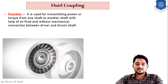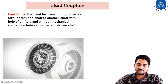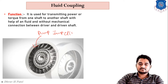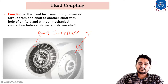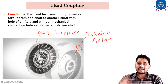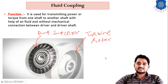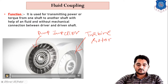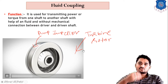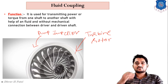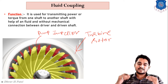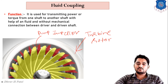Let's look at the basic construction of fluid coupling using a 3D animation. On the driver shaft, one pump impeller is mounted, and on the driven shaft, one turbine rotor is mounted. Whenever the driver shaft rotates, the pump impeller rotates, and with centrifugal action on the fluid, the turbine rotor also rotates. This is how we couple the driver and driven shafts without any mechanical connection.